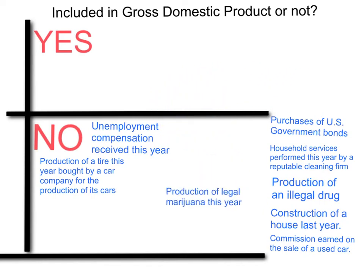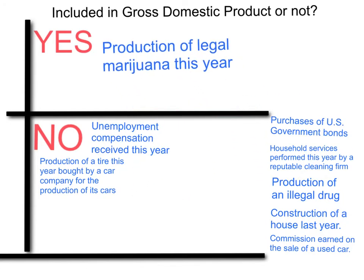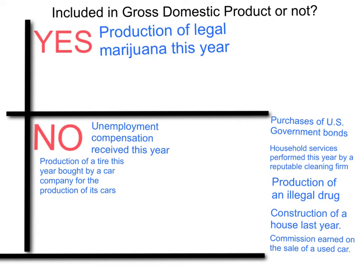Production of legal marijuana this year goes in the yes box. If it's a legal product, legal production of any good or service is included in GDP. Now, the interesting thing about marijuana is that in the United States, marijuana is actually legal in some states, so it would be included in those states' gross state product. But if it's not legal federally, then it would actually not be included in the nation's GDP — it could be included in the state's GDP but not in the country's GDP. But we're going to put it in the yes column if it's completely legal.